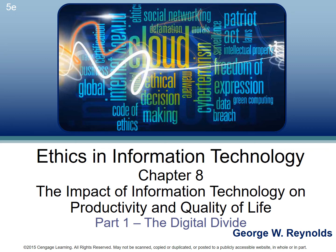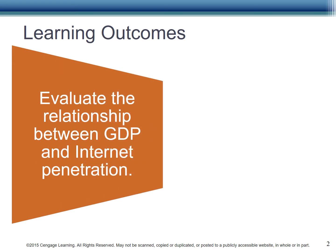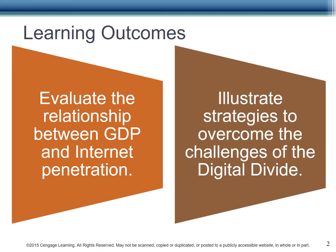Chapter 8: The Impact of Information Technology on Productivity and Quality of Life. Part 1: The Digital Divide. The learning outcomes include: evaluate the relationship between GDP and internet penetration, and illustrate strategies to overcome the challenges of the digital divide.